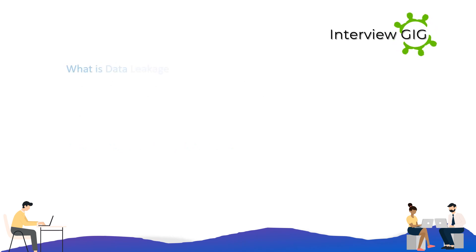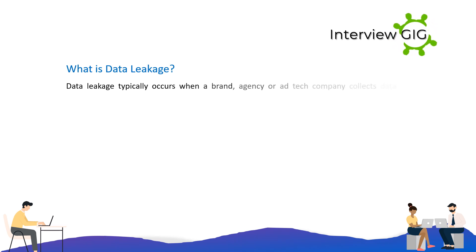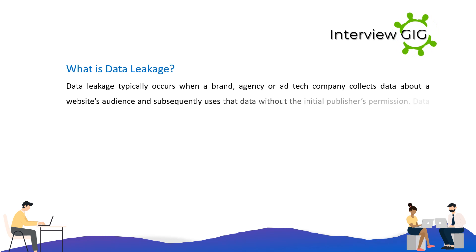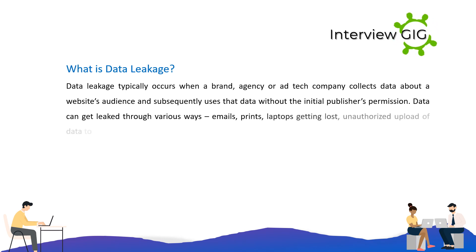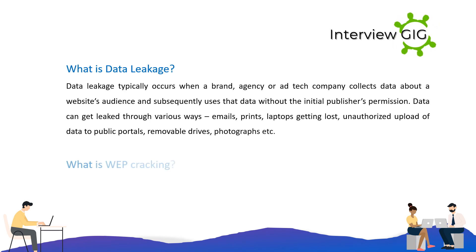What is data leakage? Data leakage typically occurs when a brand, agency, or tech company collects data about a website's audience and subsequently uses that data without the initial publisher's permission. Data can get leaked through various ways: emails, prints, laptops getting lost, unauthorized upload of data to public portals, removable drives, photographs, etc.